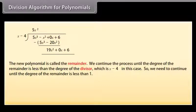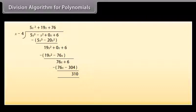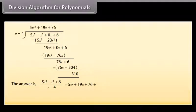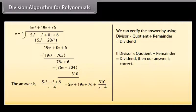We continue the process until the degree of the remainder is less than the degree of the divisor, x minus 4, so we continue until the remainder is a constant. The answer is: 5x cubed minus x squared plus 6 divided by x minus 4 equals 5x squared plus 19x plus 76 plus 310 upon (x minus 4). We can verify using: divisor times quotient plus remainder equals dividend. If that holds, our answer is correct.